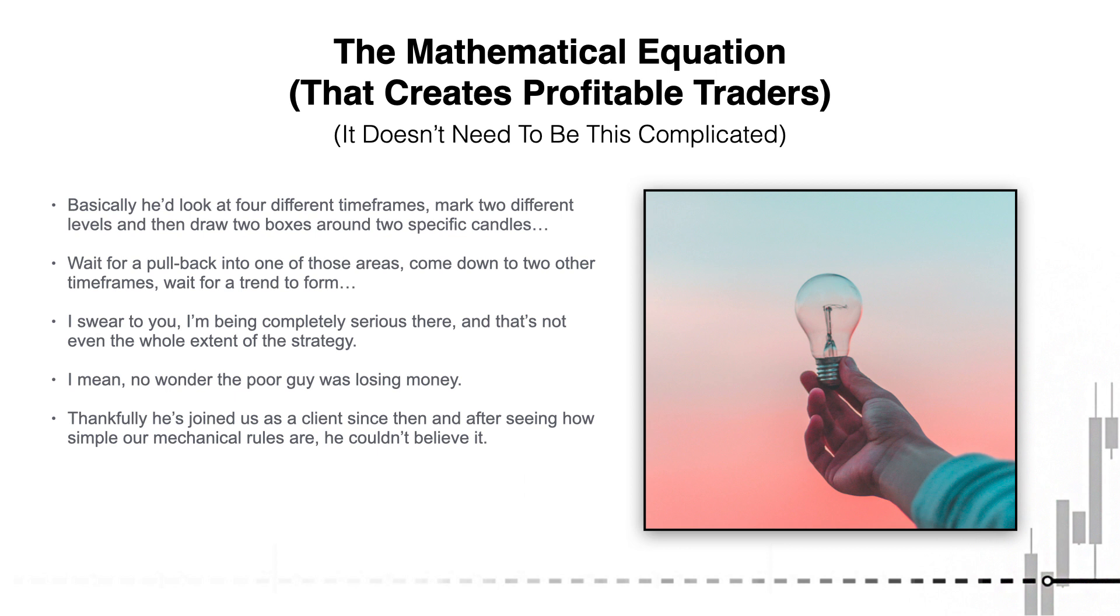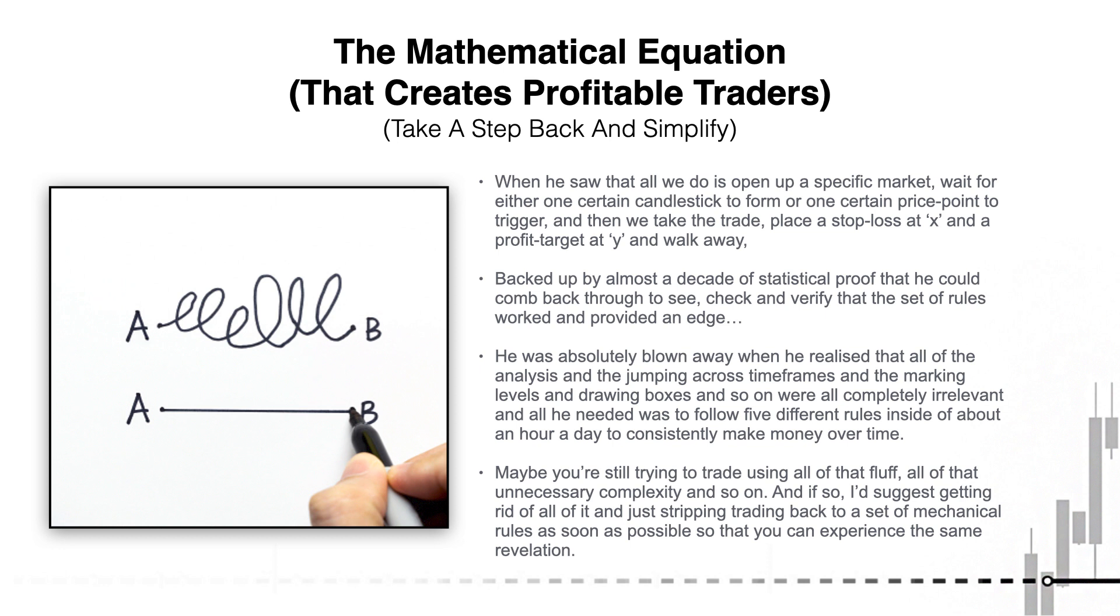And since then, and after actually seeing how simple our mechanical rules are, he just couldn't believe it. When he saw that all we do is open up a specific market, wait for either one certain candlestick to form or one certain price point to trigger, and then we just take the trade, place a stop loss at X, place a profit target at Y, and just walk away, backed up by almost a decade of statistical proof that he could actually come back through to see, check, and verify that the set of rules worked and provided an edge.